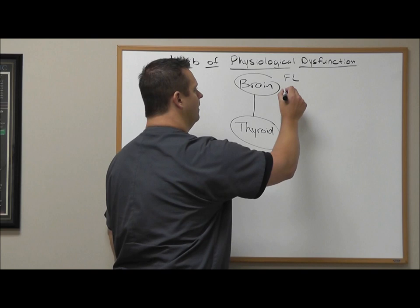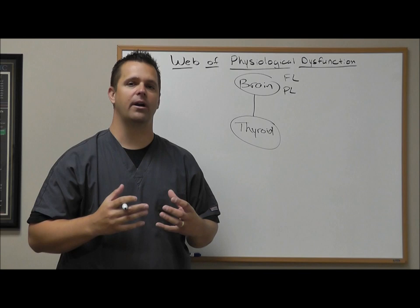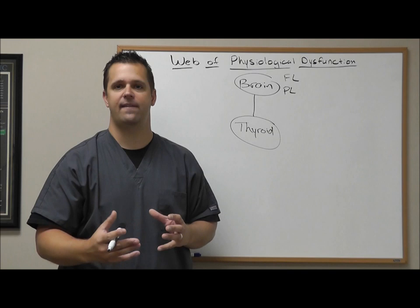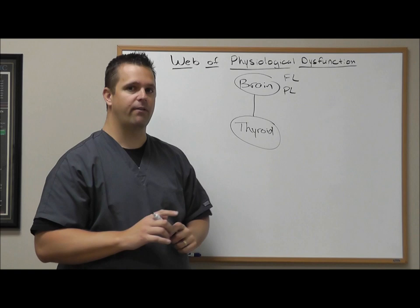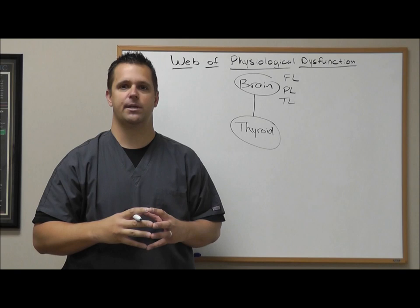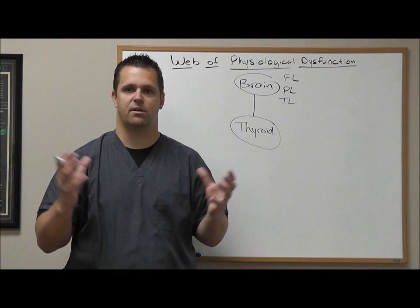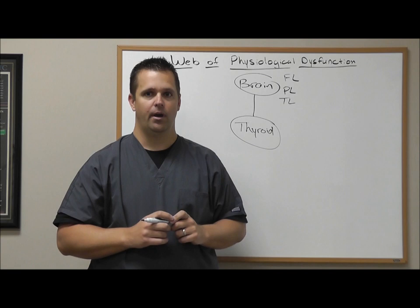The next part of the brain is the parietal lobe. Our parietal lobe is the part of the brain that allows us to feel things. So if you have symptoms of numbness, tingling, or burning, you have a poor functioning parietal lobe. If you're sitting there watching this video and you have pain, that is not normal — that could be a sign of a poor functioning parietal lobe. The next part is our temporal lobe. When you have a poor functioning temporal lobe, you have symptoms of forgetfulness — you walk into a room and forget why you walked in, you constantly forget where you put your keys, or mid-sentence you completely forget what you're talking about.